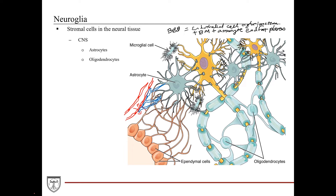Another type of stromal cell in the CNS are the microglial cells, also known as microglia. The microglial cells have numerous dendritic processes that extend out of the cell body, and they are actually derived from hematopoietic origin — these are the resident macrophages in the CNS. Lastly, ependymal cells are the cells that line the CNS-filled ventricles as well as the outsides of the choroid plexus, which produces the cerebrospinal fluid.